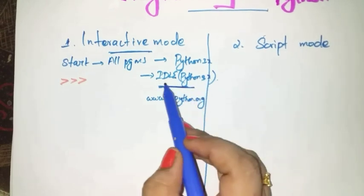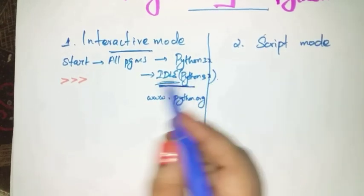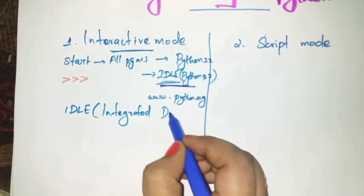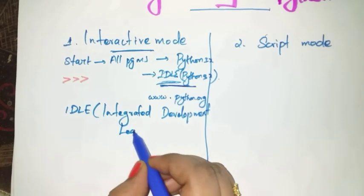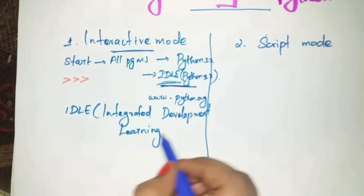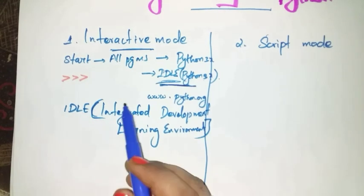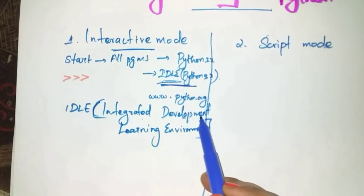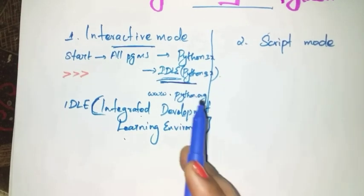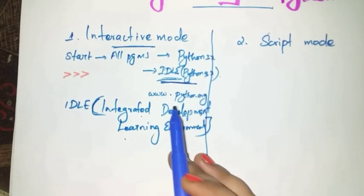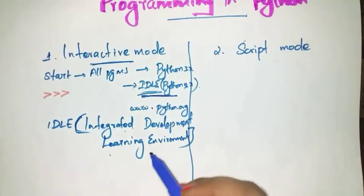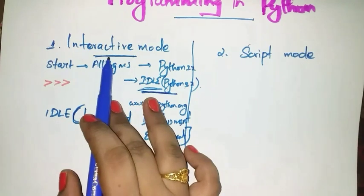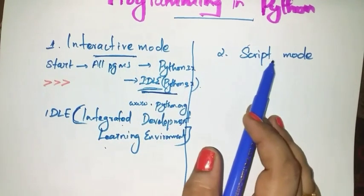What is the full form of IDLE? IDLE stands for Integrated Development and Learning Environment. You can download this Python programming language from the website www.python.org. After downloading this Python software, you can type your Python codes using any one of these two modes.